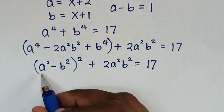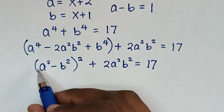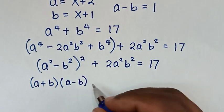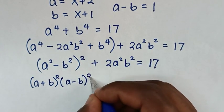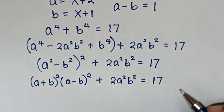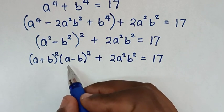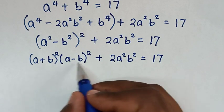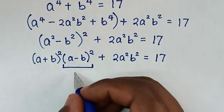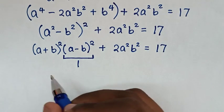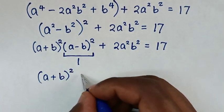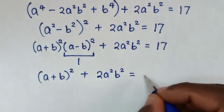In the next step, a² - b² inside the bracket is in the form of a difference of squares, so it equals (a+b)(a-b). With the square outside, it becomes [(a+b)(a-b)]² + 2a²b² = 17. Since a - b = 1, we have 1² times (a+b)², so it becomes (a+b)² + 2a²b² = 17.